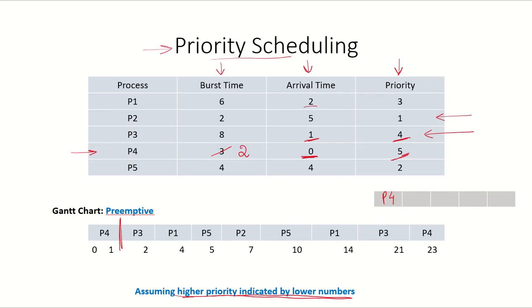Now P3 starts running. At time 2, P1 arrives in the ready queue. So the priority of P1 which is 3 will be checked with the priority of P3 which is 4. So we can see that P1 has the higher priority. So now P1 will be given the CPU and P3 will come in the ready queue. And since P3 has already run for one time unit, only 7 time units are left.